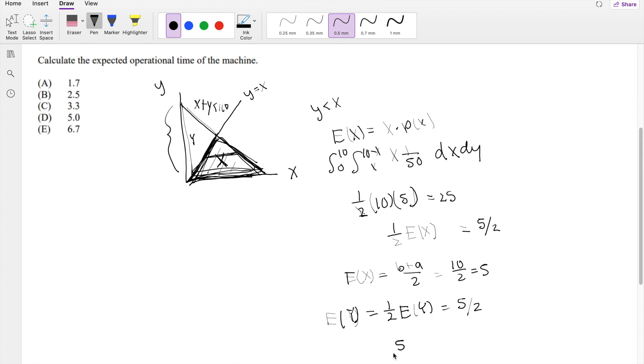So then adding up the 5 halves and the 5 halves together, this is equal to 5, our answer, d.